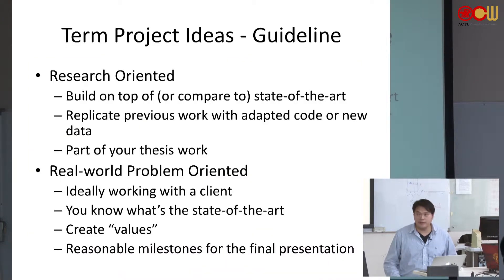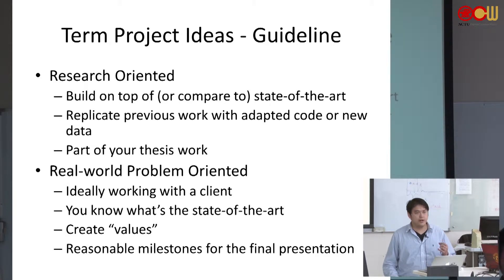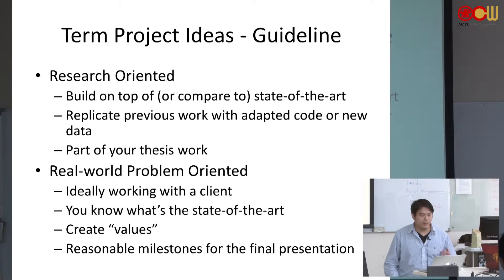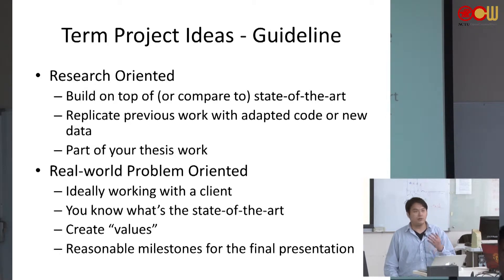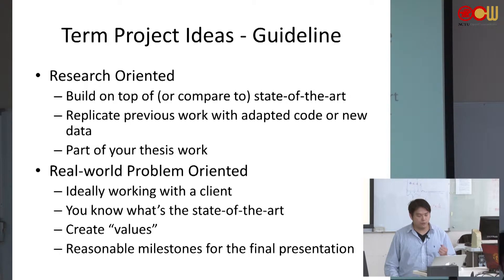Here is a guideline and suggestion: last time we mentioned you should find five papers and make your term project either research-oriented or real-world problem-oriented. For the research-oriented part, if you want to publish something, you need to know the state of the art. You can start from scratch, but you will have to compare your results to the state of the art.